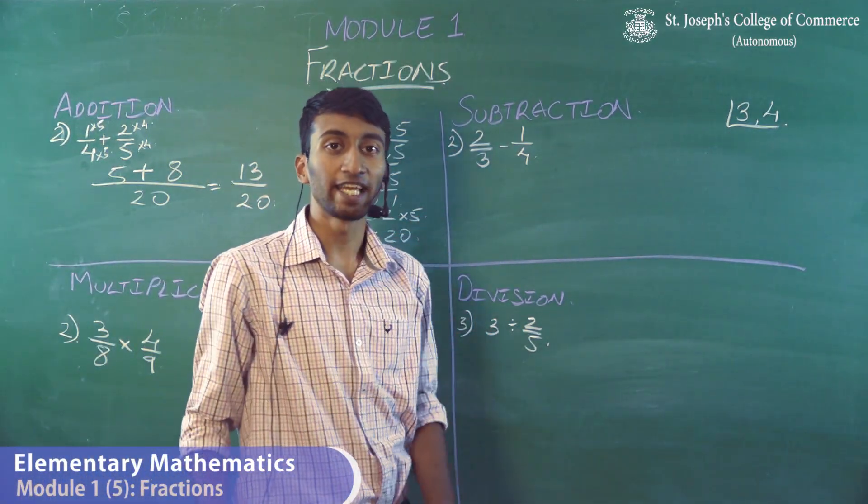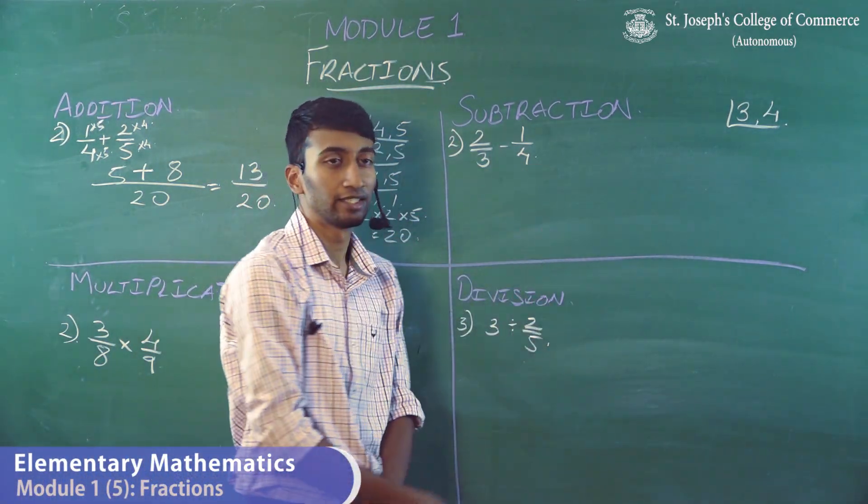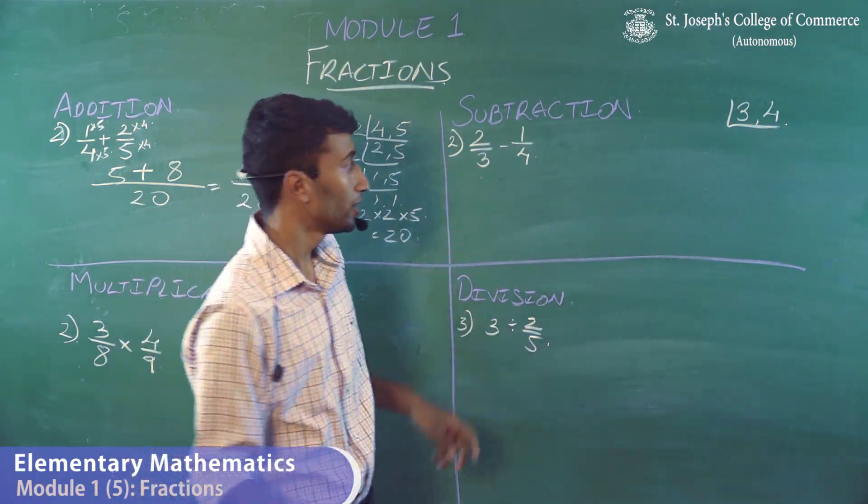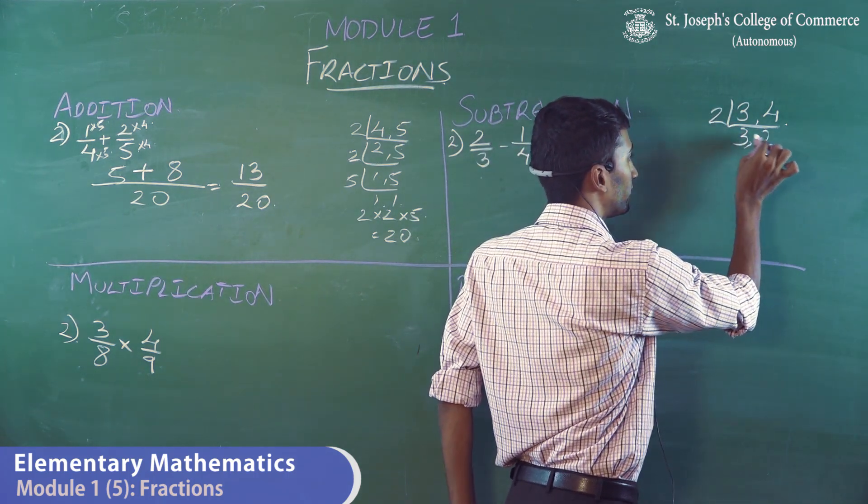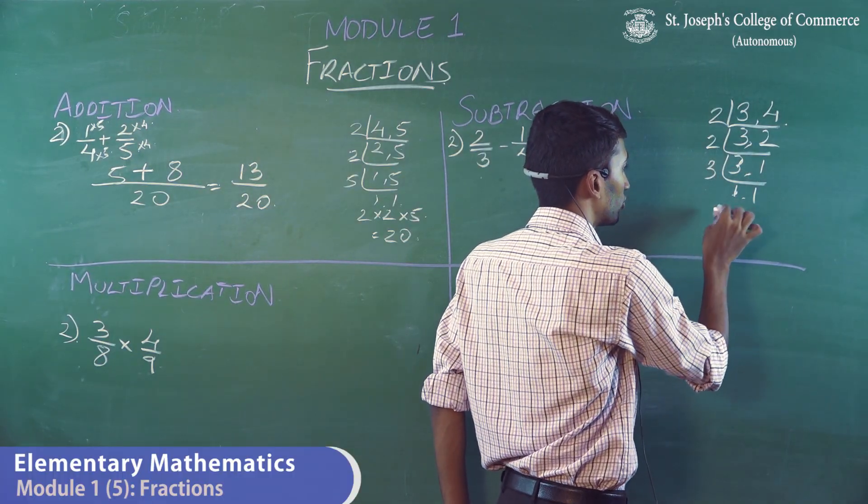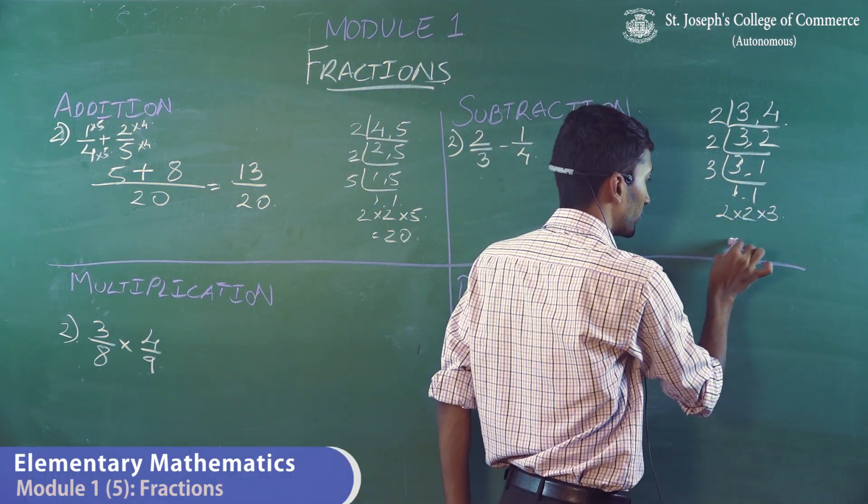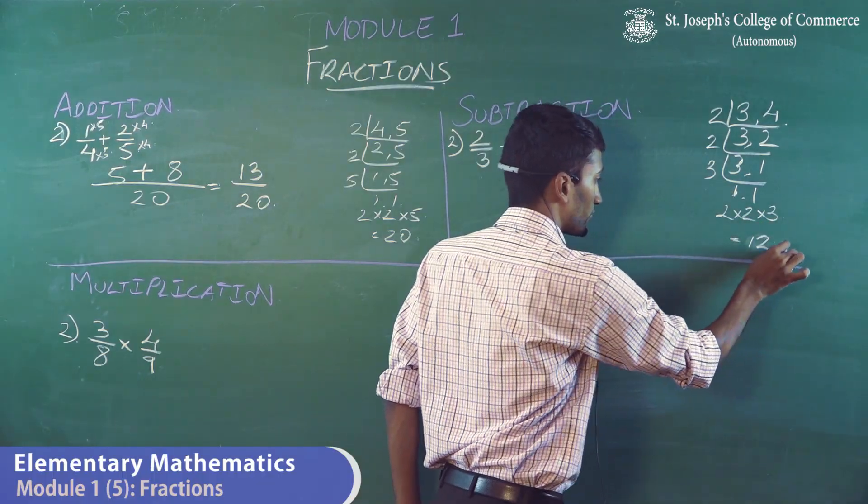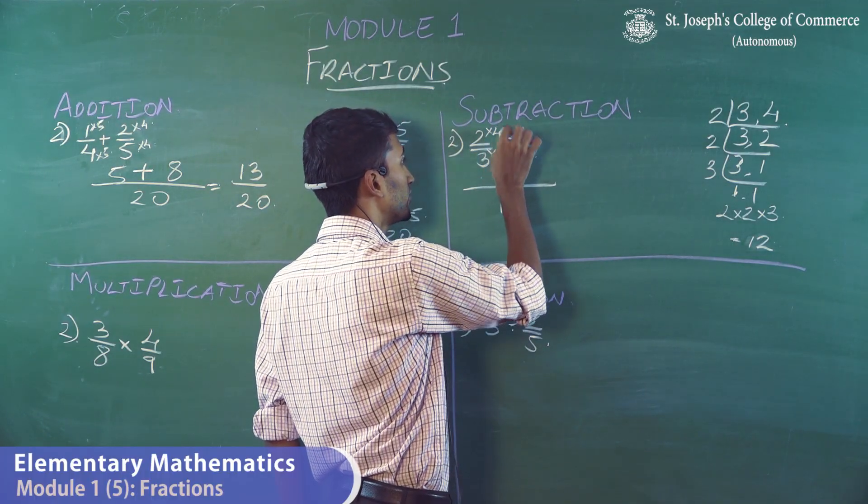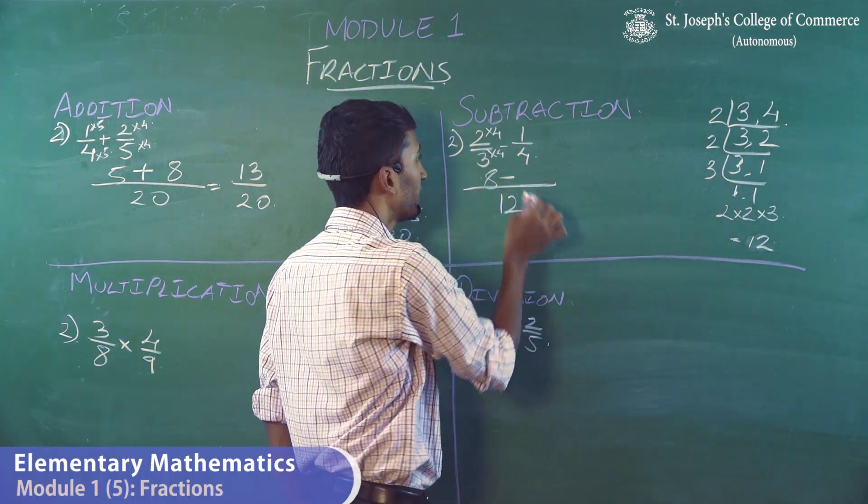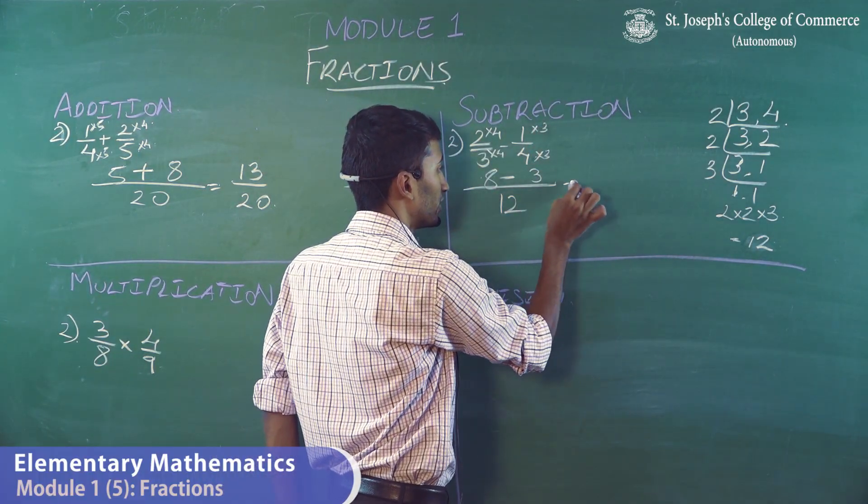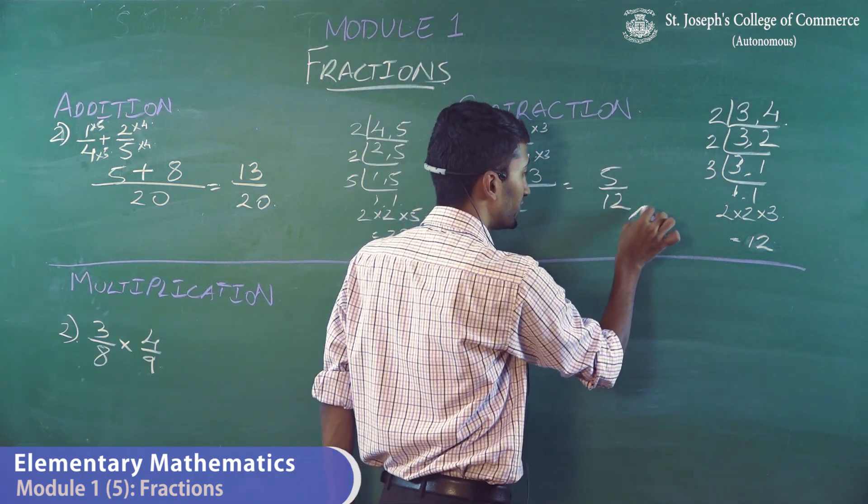We move into subtraction where we solve the second sum, that is 2 by 3 minus 1 by 4. The denominators are not the same, so you have to take the LCM. 2 twos are 4, 2 ones are 2, and 3 ones are. So 2 into 2 into 3 will give you 12. If 12 is your denominator, 3 fours are 12, so multiply the numerator also by 4. 4 twos are 8, minus 4 threes are 12. Multiply the numerator also by 3, that will be 3. So 8 minus 3, 5 by 12. This is your answer.